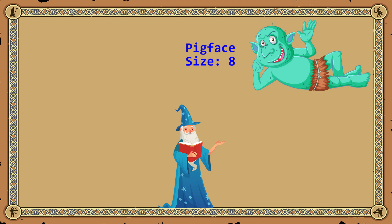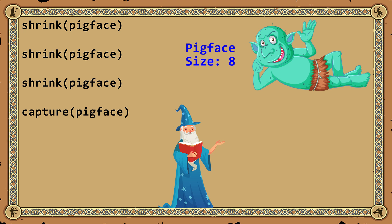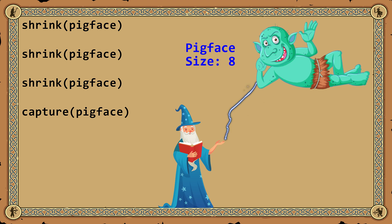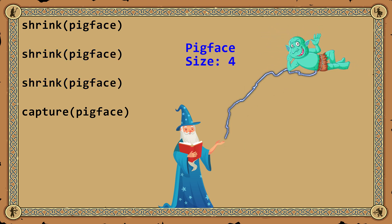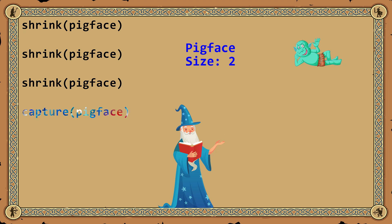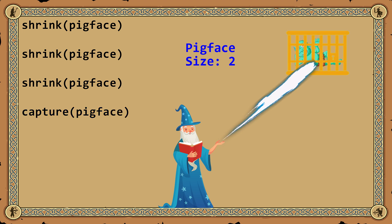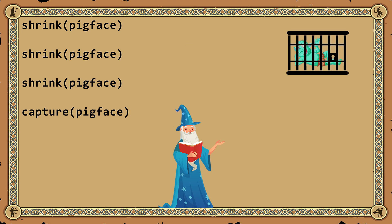In the earliest days, wizards employed a laborious method. They would cast a shrink spell, targeting the goblin. Each casting would further reduce the goblin's size. When the goblin was finally small enough, the wizard would cast a capture spell, trapping it safely. This method, while effective, was incredibly time-consuming.